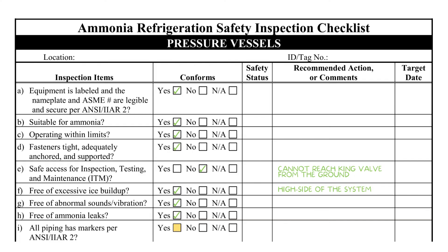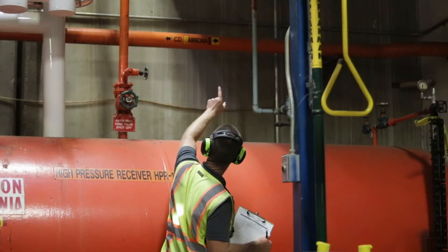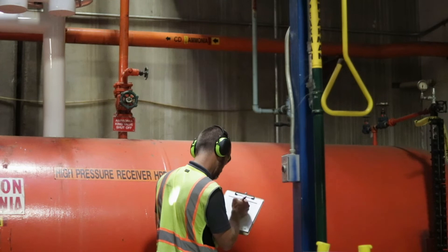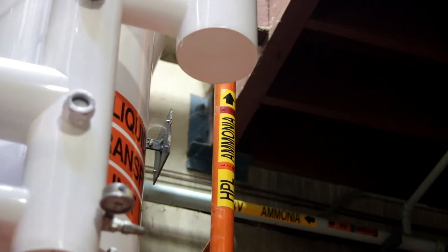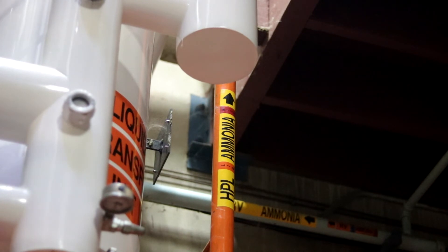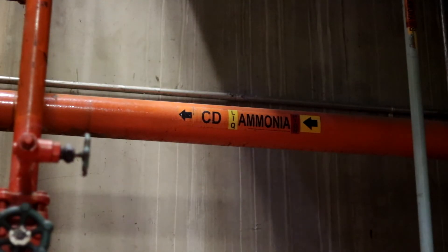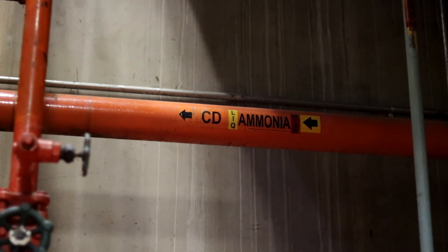Item I inquires if the pipes are marked as required by IIAR Standard 2. Standard 2 requires piping mains, headers, and branches to be labeled with the following: the word ammonia printed in black letters; the physical state abbreviation, liquid or vapor; the relative pressure, high or low; an arrow depicting the direction of flow in the pipe; and a service abbreviation indicating the purpose of the pipe.